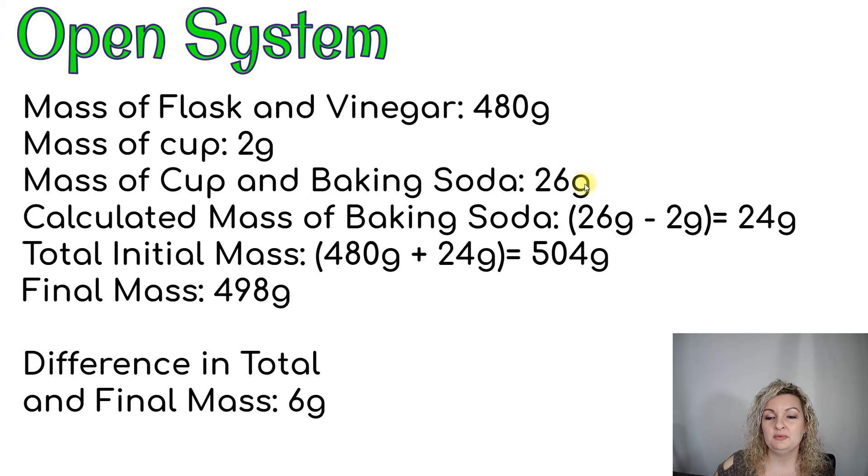So I'm going to subtract the mass of the cup. With the cup it was 26. If I subtract the cup that means I have 24 grams of baking soda that I'm actually using in my experiment. We don't want to include the mass of the cup. It wasn't part of the actual chemical reaction. So when I combined the baking soda, the vinegar, and the flask they all come to 504 grams.